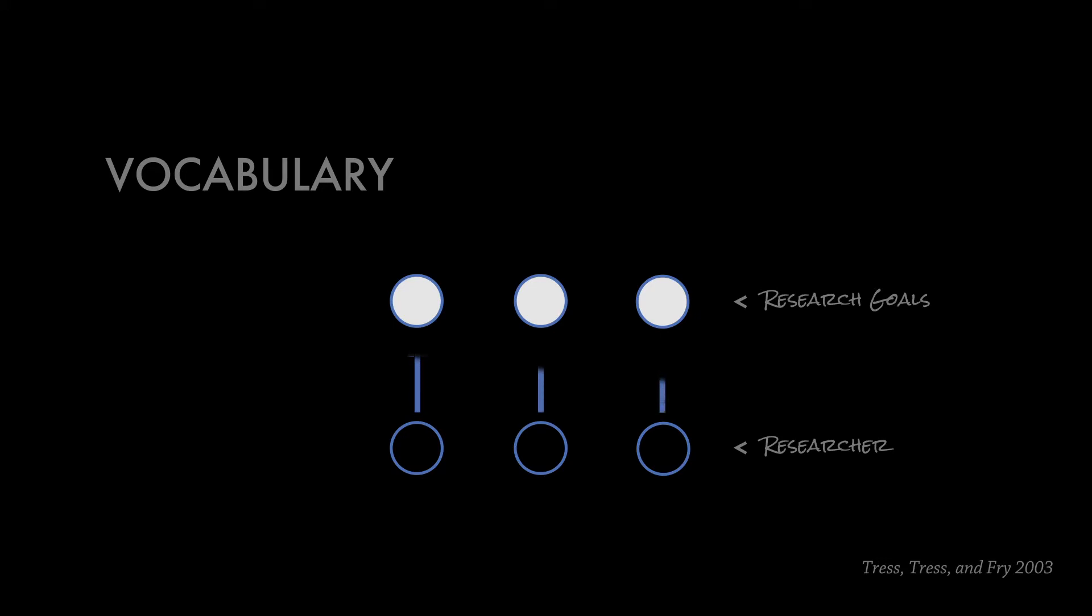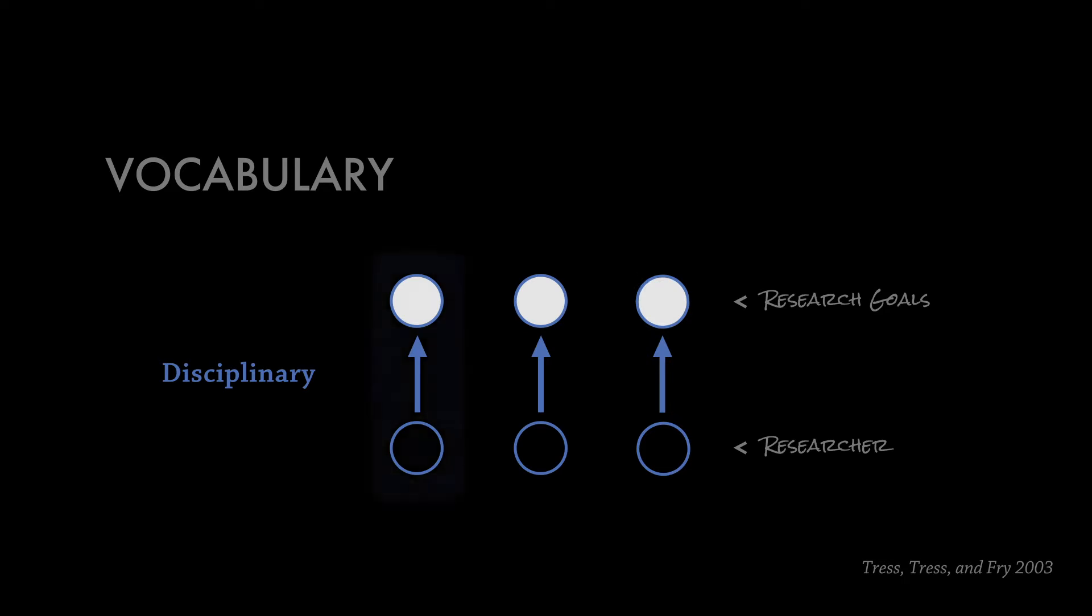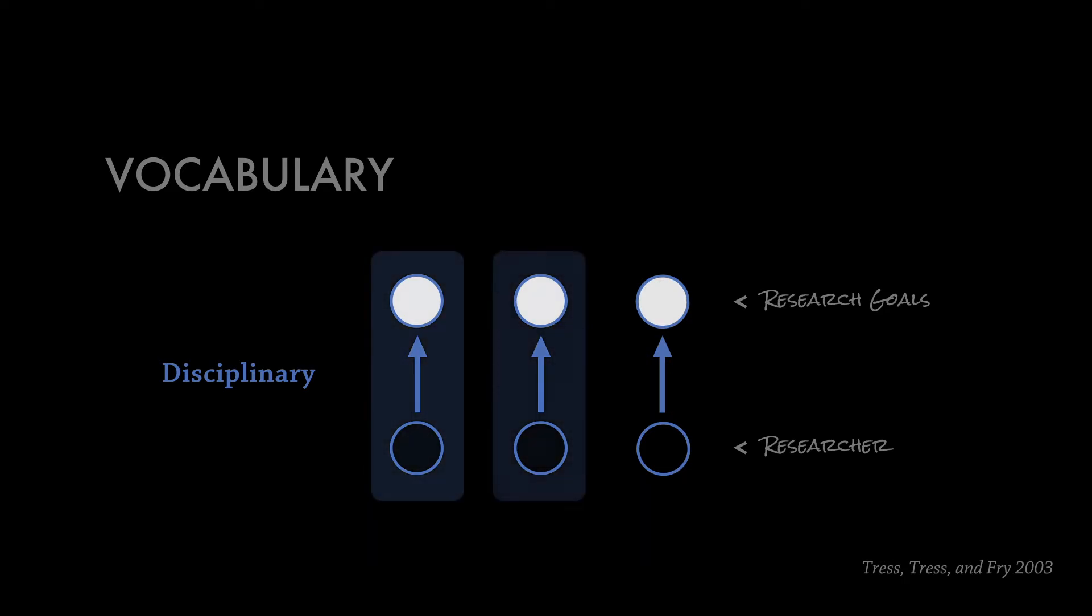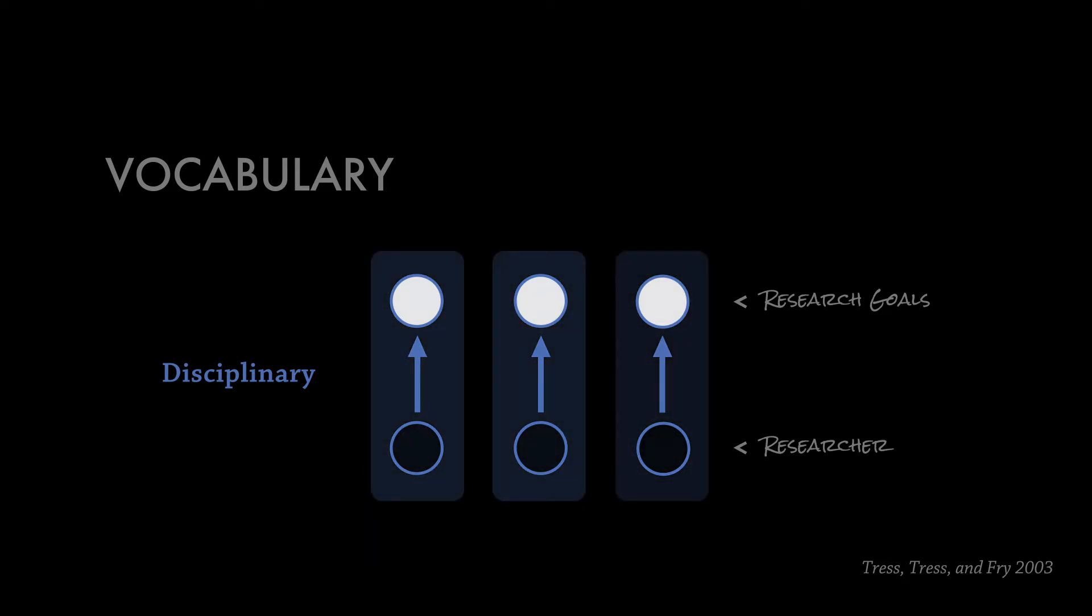So if you think about, you have a researcher, they're the black dots. You have a research goal, that's the white dots, and the arrows try to illustrate the relationship between the researchers and their goals. In disciplinary research, you have three researchers, and they all have their own goals, and there's no real interaction between them. They could be working in the same room next to each other, but there's no relationship between their research.